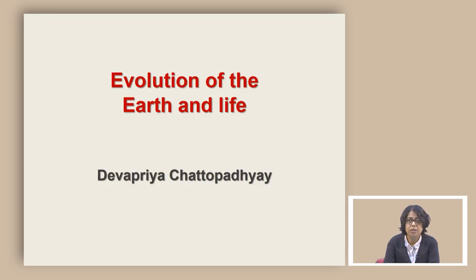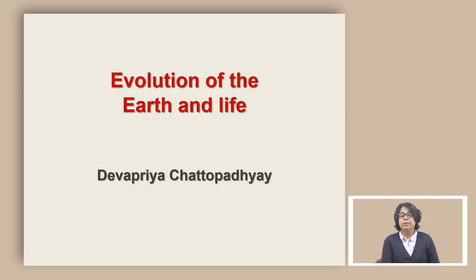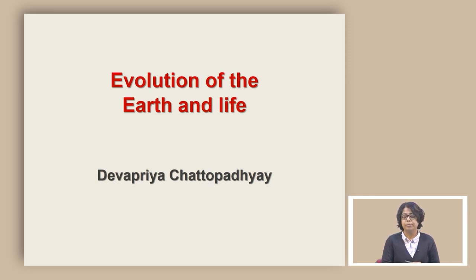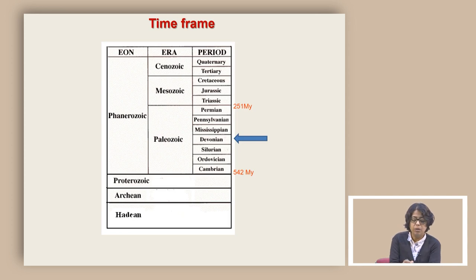Welcome to the course Evolution of the Earth and Life. Today we are going to learn about the transitional forms between the fish and tetrapod. When we talk about this transition, before we can comment on what kind of features we are looking for in a transitional organism, it is important to understand the challenges a group faces when moving from water to land. The time frame falls into the Eon Phanerozoic, the Era Paleozoic, focusing on the period of Devonian.